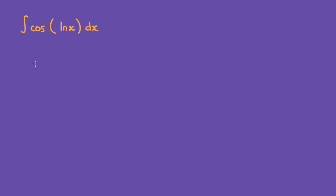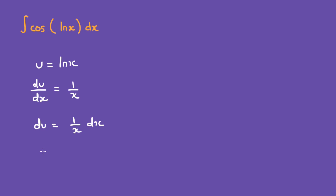Let's do u-substitution, so let u equal to ln of x. What is the derivative of ln of x? That's just 1 over x. So we have du is equal to 1 over x times dx, and dx is going to be equal to x times du, because we multiply both sides by x.